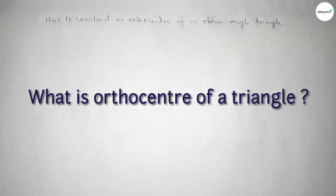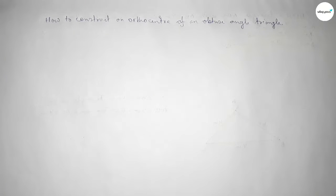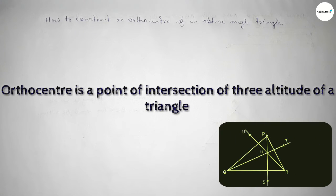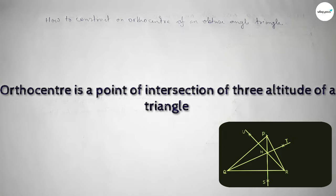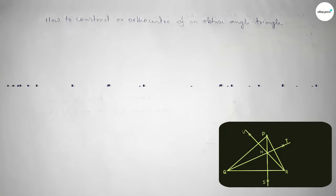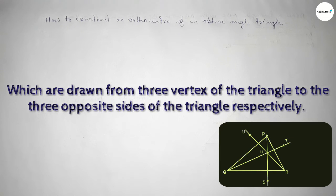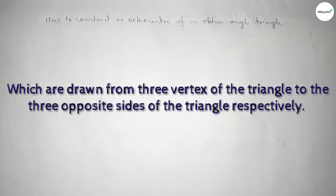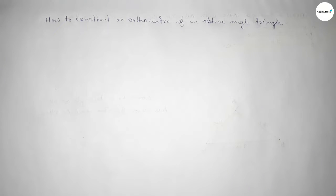First, talking about what is the orthocenter of a triangle. The orthocenter is a point of intersection of three altitudes of a triangle, which are drawn from three vertices of the triangle to the three opposite sides of the triangle respectively.